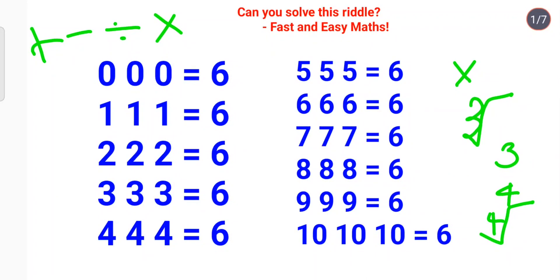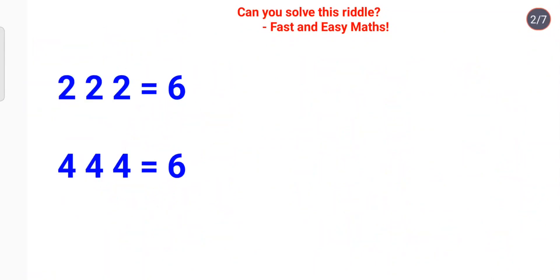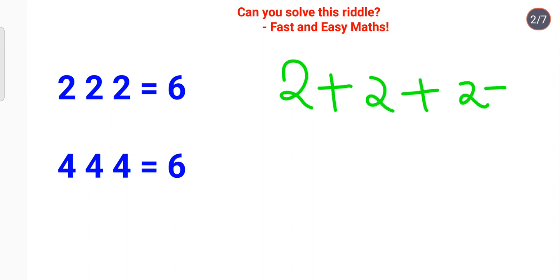Let's start with the first couple which are very easy. The first one is 2, 2, and 2, and we have to make it equal to 6. We can simply do 2 plus 2 plus 2, which gives us 6.